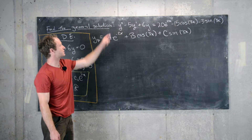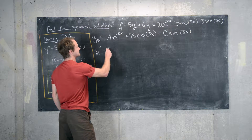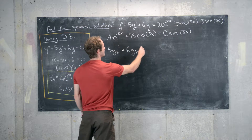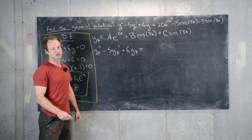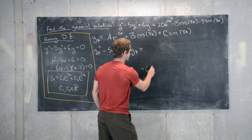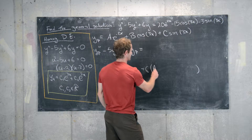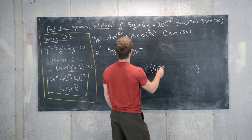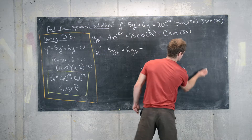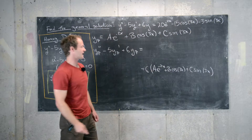What we'll do is plug this into the differential equation. We want yp double prime minus 5yp prime plus 6 times yp equal to the right-hand side. We'll build this up from the bottom. So for the 6yp term, yp is of the form a e to the minus 2x plus b cosine 3x plus c sine 3x.